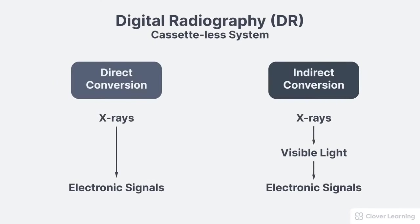DR acquires x-ray images in one of two ways: either using direct conversion, which converts x-rays to electronic signals, or indirect conversion, which converts x-rays to visible light and then to electronic signals.